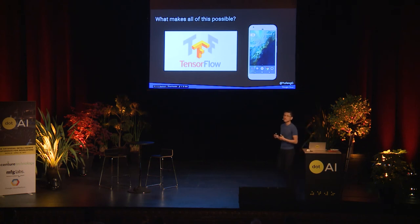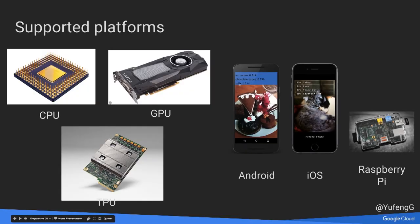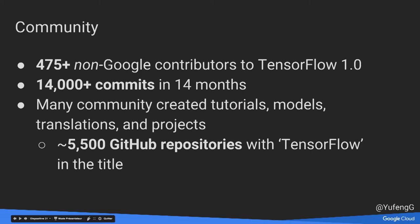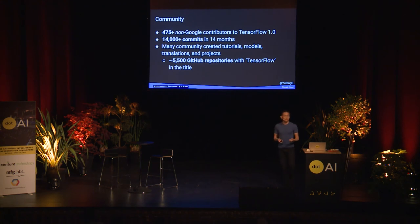What makes this possible is TensorFlow — Google's machine learning library. It was open sourced in November of 2015 and hit version 1.0 this past February. With that we have support not just for CPUs and GPUs, but also Android, iOS, and Raspberry Pi. For those who like to tinker with IoT devices, you can load a model onto a Raspberry Pi and recognize things without any network traffic. In the first 14 months there were over 14,000 commits and hundreds of non-Google contributors. Now that it's 1.0, it is production ready — the APIs are stable and backwards compatible.